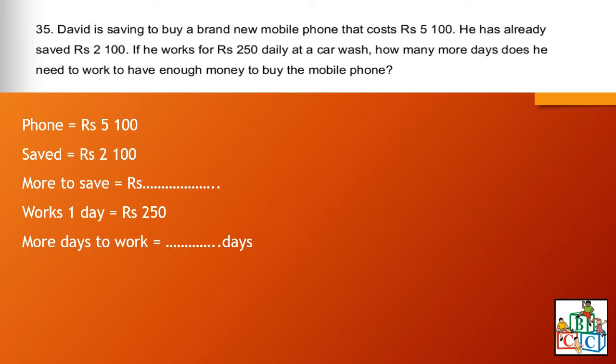Question number 35: David is saving to buy a brand new mobile phone that costs 5100 rupees. He has already saved 2100 rupees. If he works for 250 rupees daily at a car wash, how many more days does he need to work to have enough money to buy the mobile phone? The mobile phone costs 5100 rupees and he has already saved 2100 rupees — how much more does he need to save?